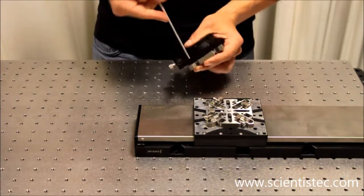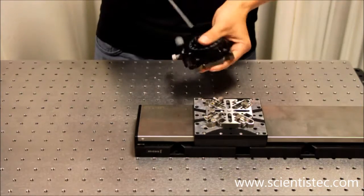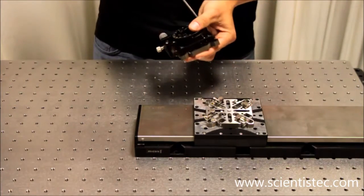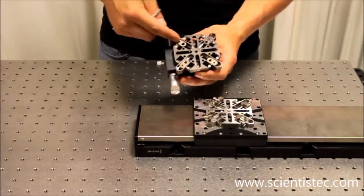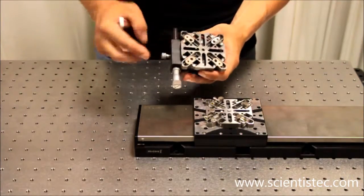After inserting the last screw, I tighten all of them again. From the back side, it becomes visible how the sliding blocks are located in the long holes.